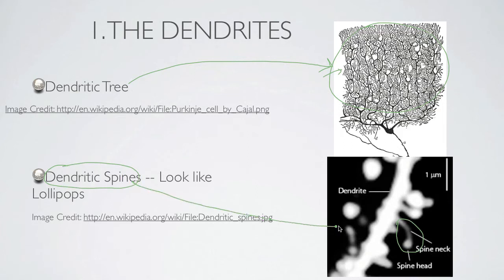The dendritic spines are like little antennas that can receive incoming signals from nearby neurons, and the role of the dendrite is to transmit that signal all the way down to the cell body.